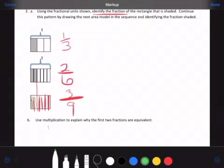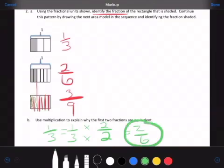Part B says to show how one third can be equal to two sixths. So we write one third again. We multiply. What can I multiply by to get two sixths? That's right, two over two. Three times two is six, one times two is two, because two sixths is equal to one third.